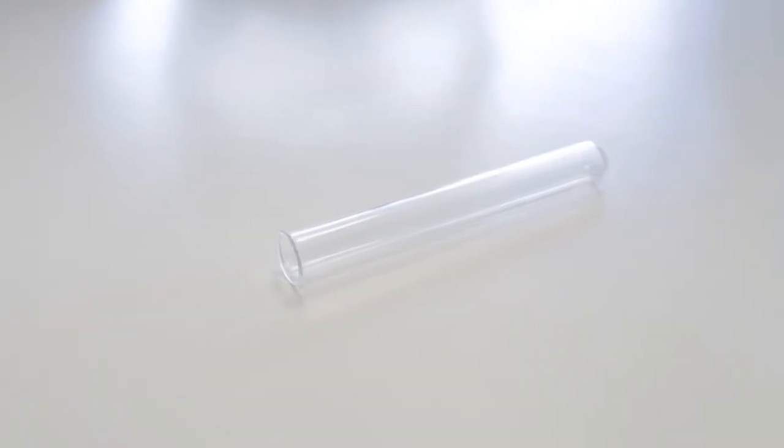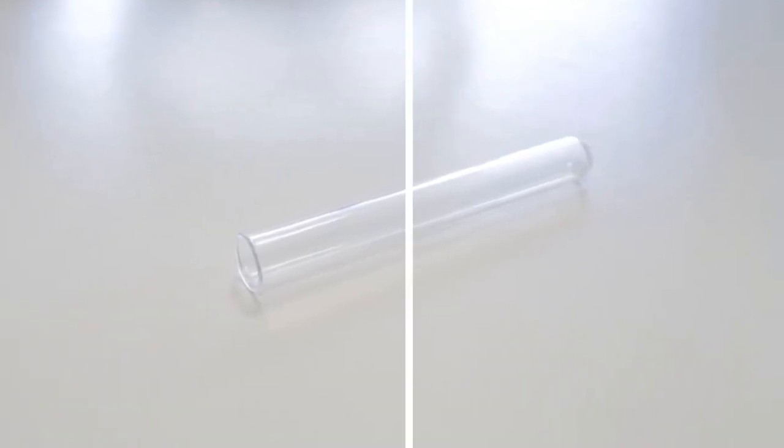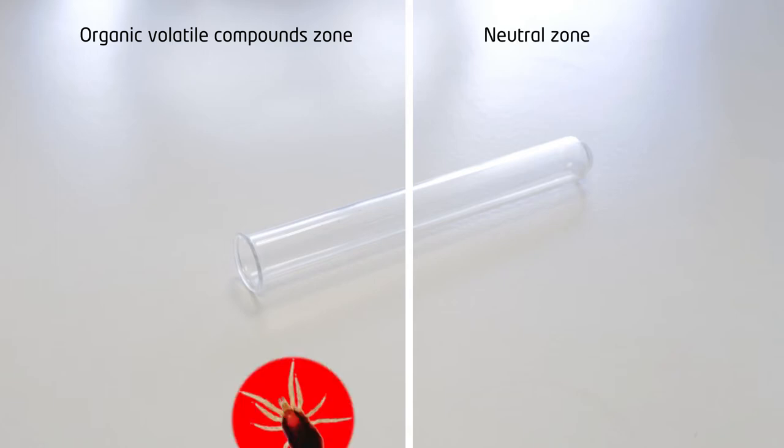The test tube was divided in two zones, the organic volatile compound zone and the neutral zone. Red mites were randomly kept in the test tubes for three hours.